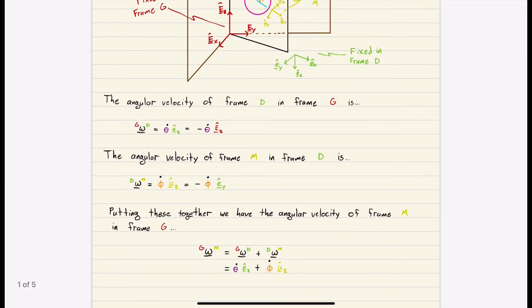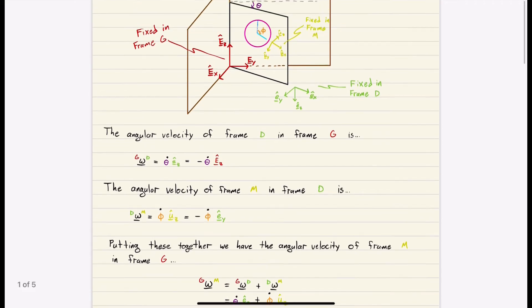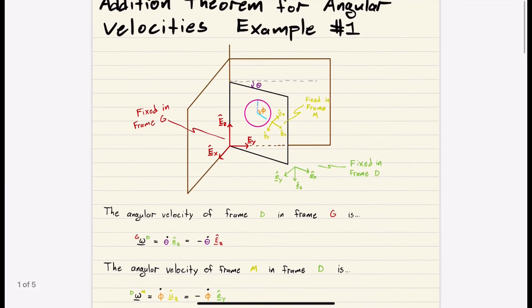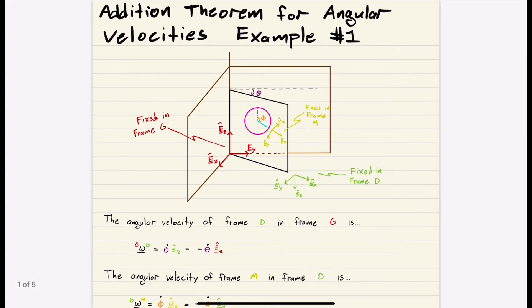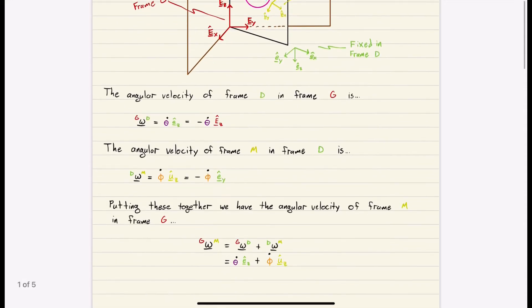So putting these together, we have the angular velocity of frame M in frame G. So remember that backstepping we did last video? We can go from M to D. So how is frame M rotating with respect to frame D? And then add that to how frame D is rotating with respect to our inertial frame. And that will give us the overall, how is frame M rotating with respect to ground?